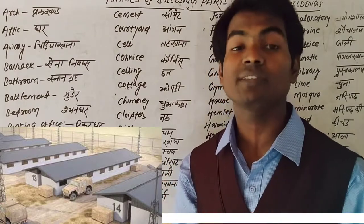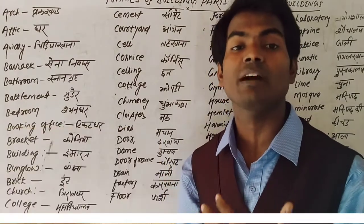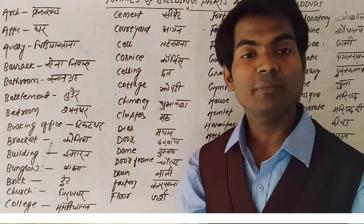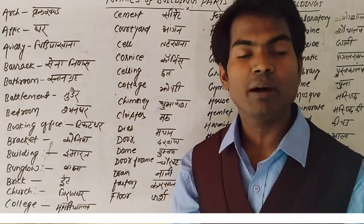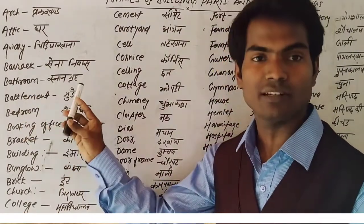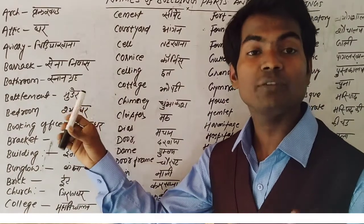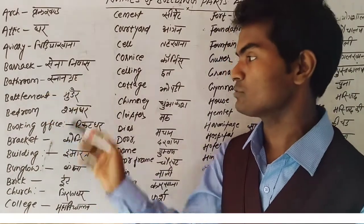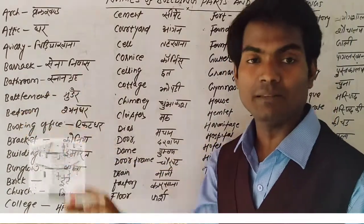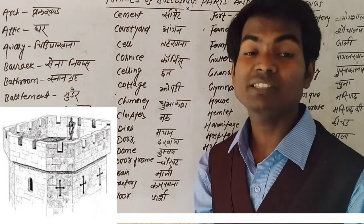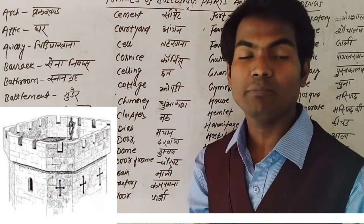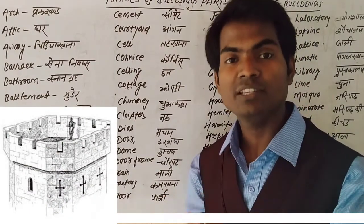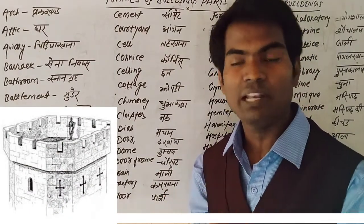Barrack — barrack means 'sena nivas.' Suppose soldiers are going to different places; they have to live somewhere, so they make a barrack. Bathroom — bathroom ka matlab hai where we take bath in the house, that is called bathroom. Battlement means 'mundane' and it is made in buildings, that is called battlement.